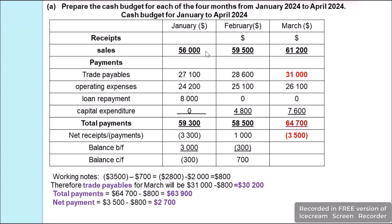We have receipts of $56,000 and payments of $59,300. Subtracting $59,300 from $56,000 we have net payments of $3,300. We pay this from the opening bank balance of $3,000. Once we use that $3,000, we will be left with a bank overdraft of $300, which will be carried forward.